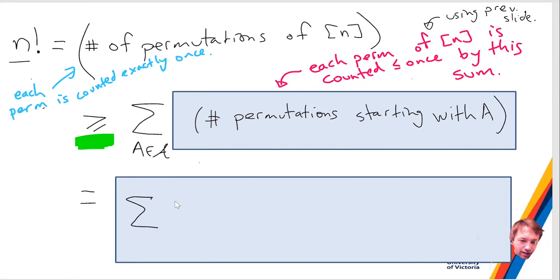Okay, and this thing is using the previous slide, the result from the previous slide. Does that make sense? And the last bit is, how many permutations start with A? Well, we already computed that. It's A factorial N minus A factorial. Where, when I say A, I mean the size of A. So what I want to do is just divide both sides by N factorial.